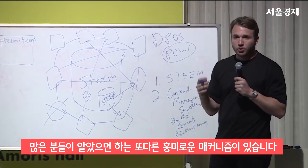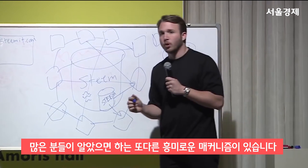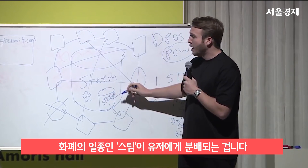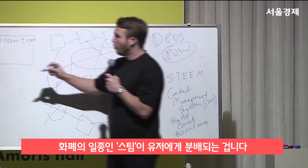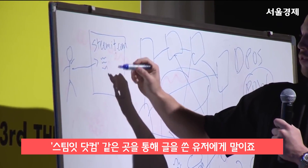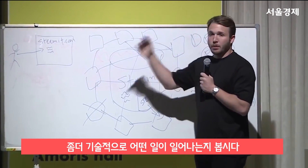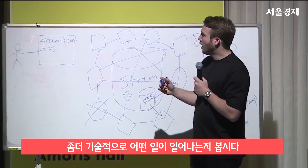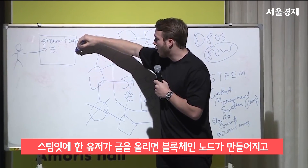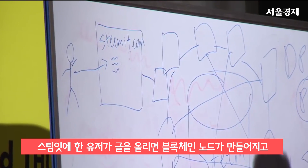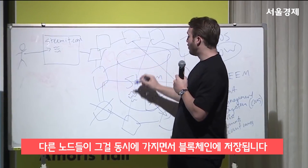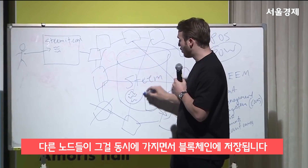Then there's another interesting mechanism. Part of this currency, Steem, is distributed to end users writing blog posts through Steemit.com. What happens mechanically with these blog posts is they get put on Steemit.com, which registers them in a blockchain node that then gets caught up with all the other nodes, and eventually through that process it gets stored on the blockchain.